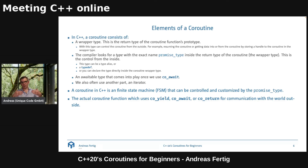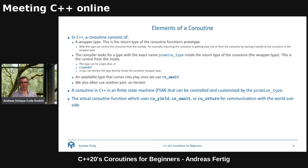A coroutine in C++ is essentially a finite state machine that can be controlled and customized via the promise type. The actual coroutine function, which uses co-yield, co-await, and co-return for communication with the outside world, gets heavily transformed by the compiler to touch all the hooks we created in our wrapper type. That's the theory behind it — now we're ready to look at some examples.